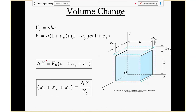Here is another quick concept. When you have strain in three directions, if you add all the strains together, it's actually equal to the volume change. The reason is simple: initially you have an object with dimensions A, B, C. When you have strain, you stretch it — get longer in each direction by εx, εy, εz. The new volume is A(1+εx)·B(1+εy)·C(1+εz). Dividing new volume by old volume gives the volumetric strain — that's the volume change.